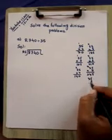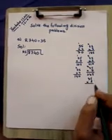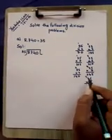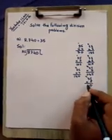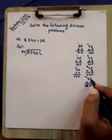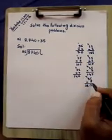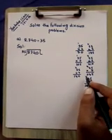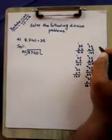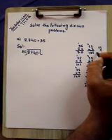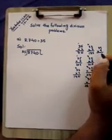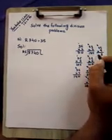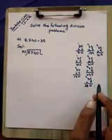Table of 35 eight times: eight fives are forty, write zero carry four; eight threes are twenty-four plus four is twenty-eight, so 35 × 8 = 280. Table of 35 nine times: nine fives are forty-five, write five carry four; nine threes are twenty-seven plus four is thirty-one, so 35 × 9 = 315. Till 9 we will multiply.